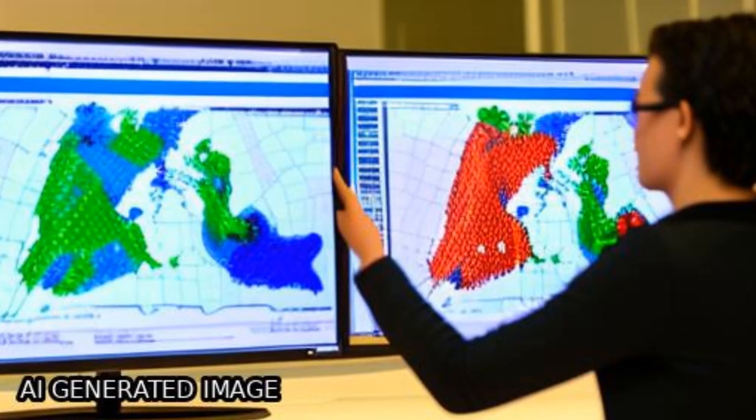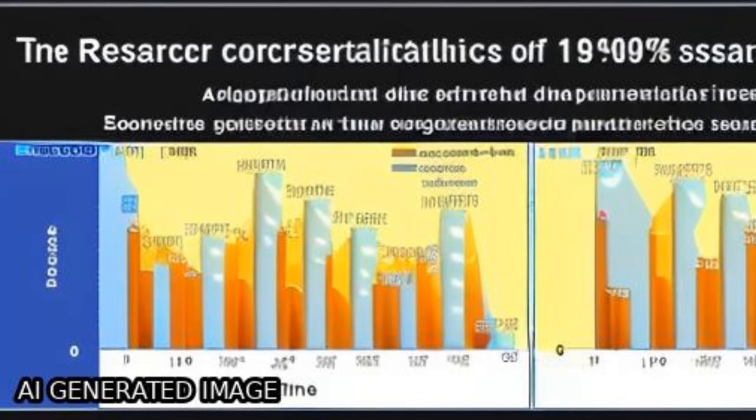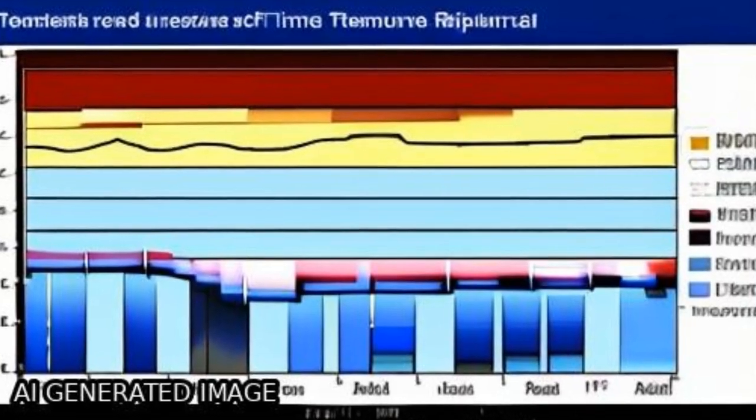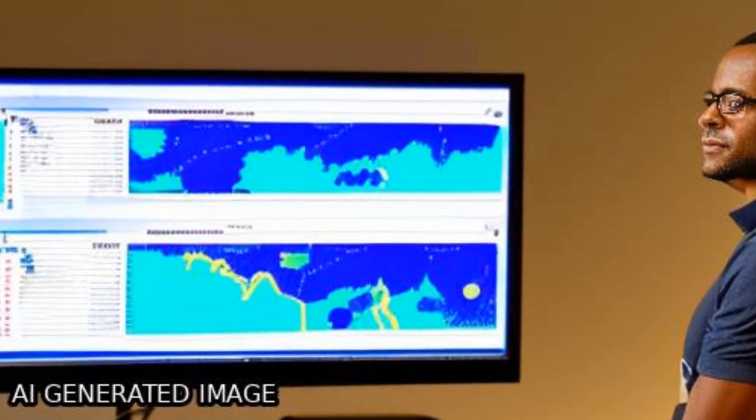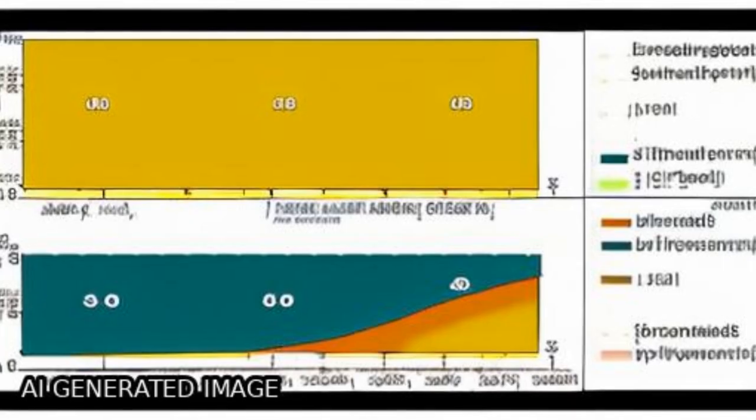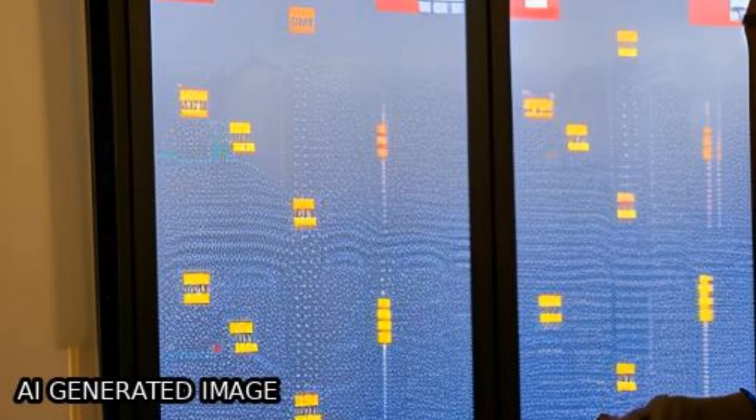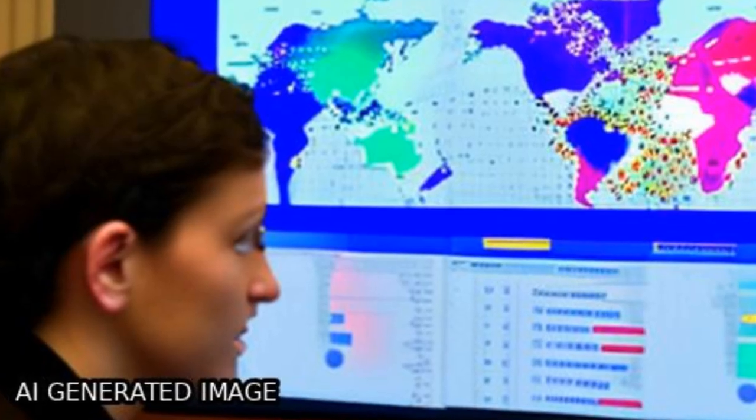This study assesses the temporal and spatial distribution of rainfall erosivity in Switzerland using time-series data for rainfall and temperature, as well as other covariates such as elevation and biogeographic units. The mean value of long-term rainfall erosivity is 1330